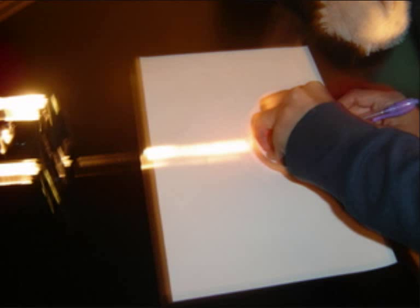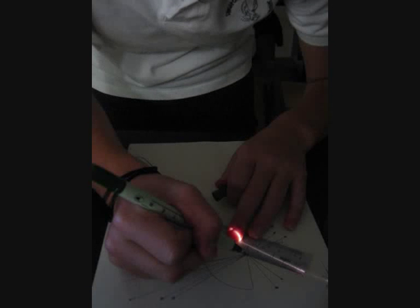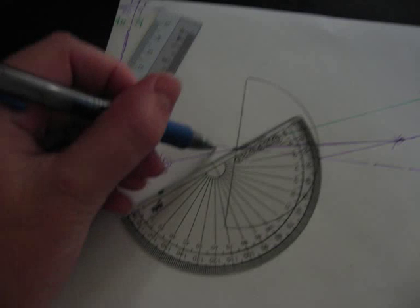Steps for the lab were quite simple. First, you trace around the block and create a ray of light halfway along the block that would be our normal light. Next, you would penetrate the block with another ray of light in any way as long as the light went through the normal, and then trace the lines of the light.